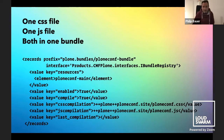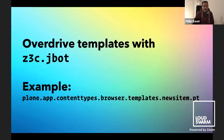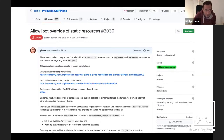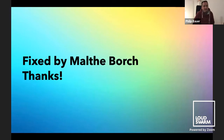This example is from the master in Plone training. Everything visually visible that has to change is overridden with ZCML JBOT — for example, the news item. But what about the Diazo rules? There was no way to override static resources, and the Diazo rules file is a static resource.